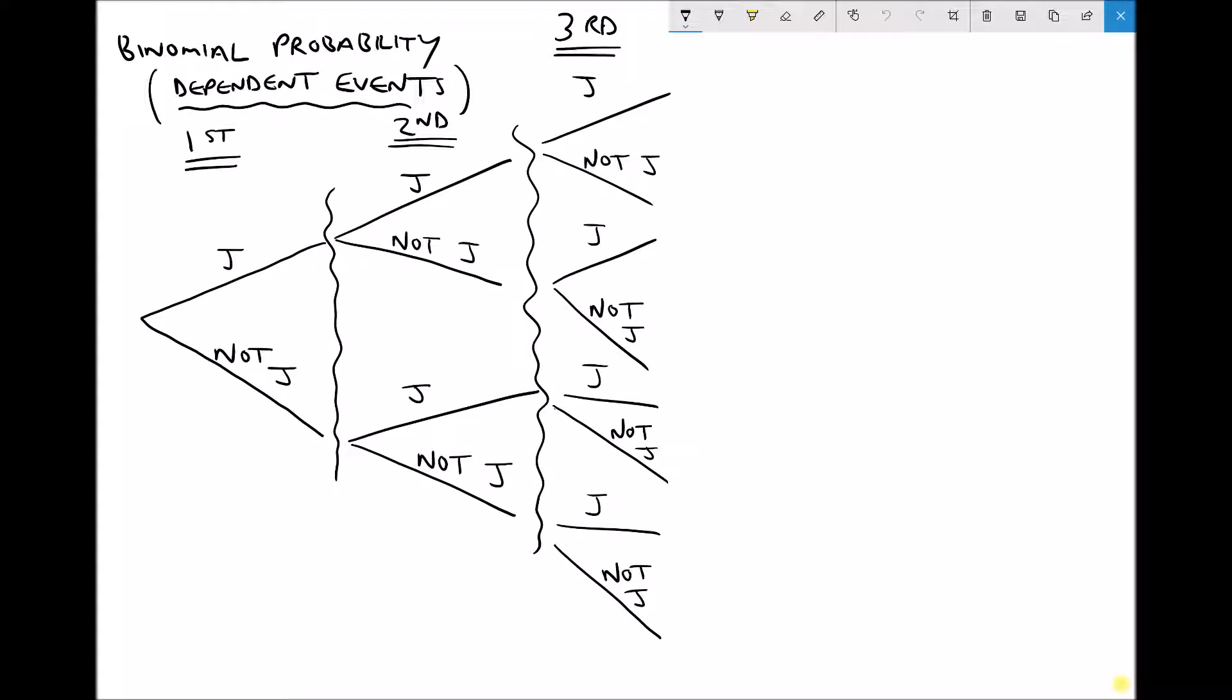If we were to take the card and then replace it in the pack, we would have an independent event. If we take the card and we don't replace it, we have a dependent event. Just a couple of things to point out before we carry on: there's four jacks in a pack and in total there's 52 cards.